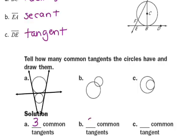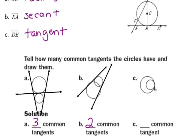Circle B only has two common tangents — the ones that run along the sides, each intersecting at one point. For the last figure, because one circle is entirely inside the other and they intersect at a single point, there is only one common tangent, and it intersects at that point where both circles touch.